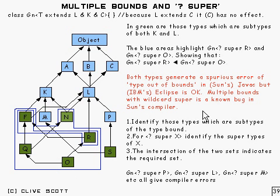Now multiple bounds with the wildcard super are a known bug in the Sun's compiler and that's why it gives the problem.